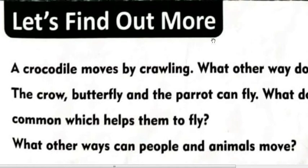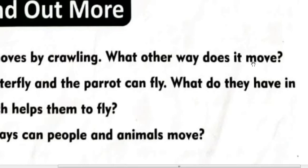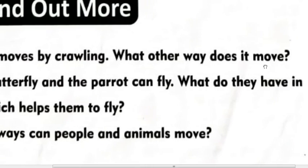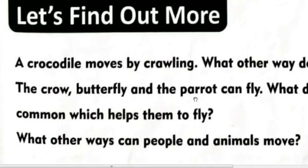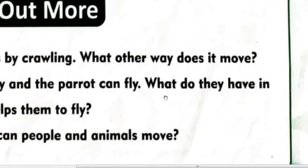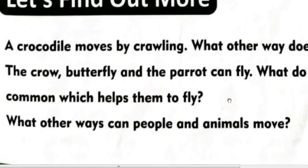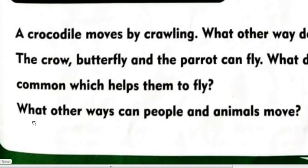Let's find out more. Crocodile moves by crawling — crocodile जो है वो crawling के ज़रिए move करता है. What other ways does it move? Next: the crow, butterfly, and the parrot can all fly. Crow यानि कव्वा, butterfly, और parrot — तोता — ये fly कर सकते हैं. What do they have in common which helps them to fly? Crow के भी wings होते हैं, butterfly के भी wings होते हैं, और parrot के भी wings होते हैं. So wings are the common feature that helps them fly.